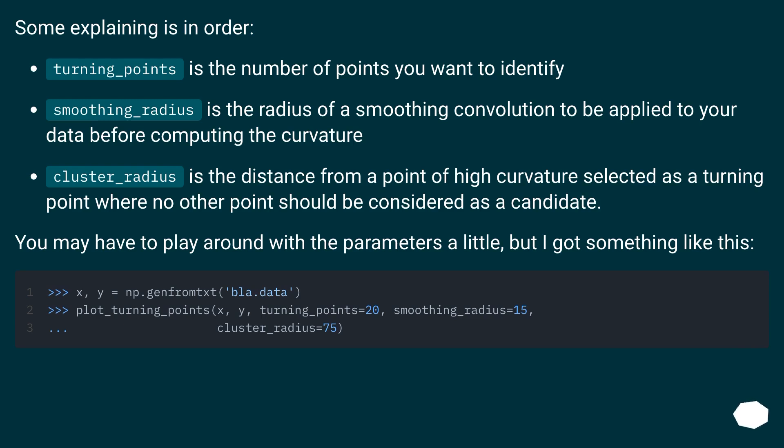Turning_points is the number of points you want to identify. Smoothing_radius is the radius of a smoothing convolution to be applied to your data before computing the curvature. Cluster_radius is the distance from a point of high curvature selected as a turning point where no other point should be considered as a candidate.